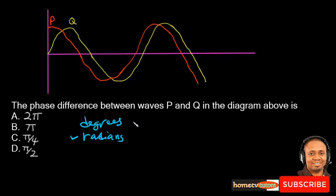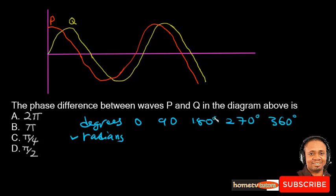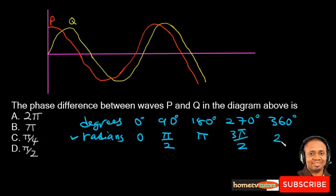From the options given, we are going to measure this in radians. It is measured in degrees from 0 to 360, so we have 90, the next is 180, followed by 270, before we get to 360 degrees. The radian equivalents are: at 0 it is 0; at 90 it is π/2; at 180 it is π; at 270 it is 3π/2.